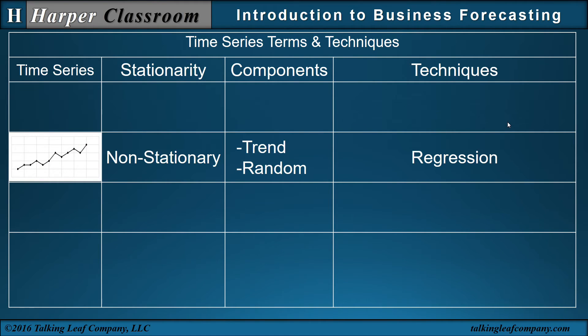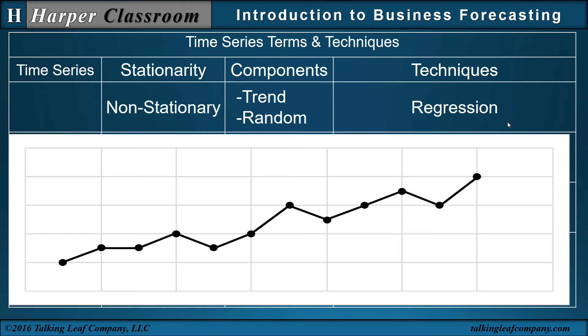Now what about the second time series? Well, when we plot that, we can see that the overall nature of this time series is no longer constant, it's increasing over time. That's referred to as a non-stationary time series.